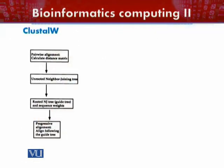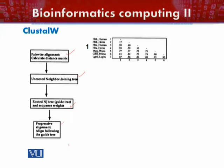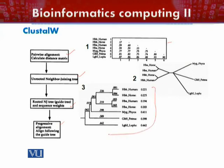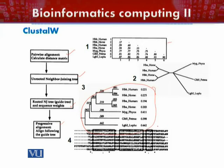The flowchart shows pairwise alignment first, which calculates the distance matrix, then a rooted neighbor-joining tree is constructed. Sequence weights are calculated and progressive alignment follows the guide tree. The distance matrix is used to generate the guide tree, clades are identified that share similar insertion and deletion features, and this yields a global multiple sequence alignment close to the optimal solution.